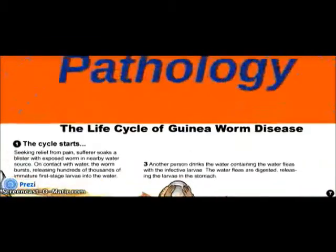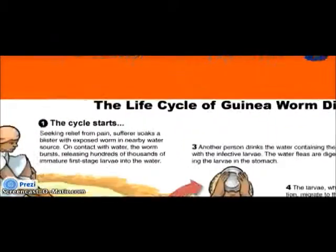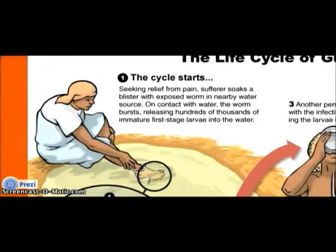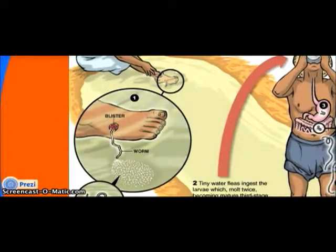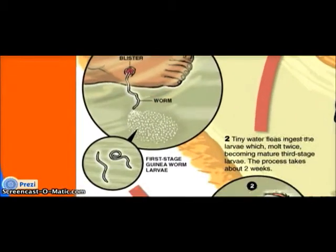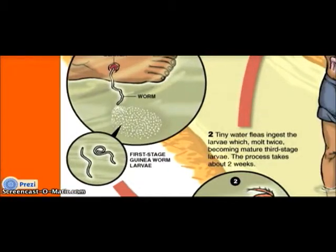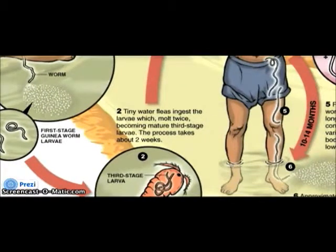The cycle starts when a sufferer seeks relief from pain and soaks the blister with the exposed worm in a nearby water source. On contact with water, the worm bursts, releasing hundreds of thousands of immature first-stage larvae into the water. Here you see the blister and the exposed worm emerging into the water, releasing its larvae.